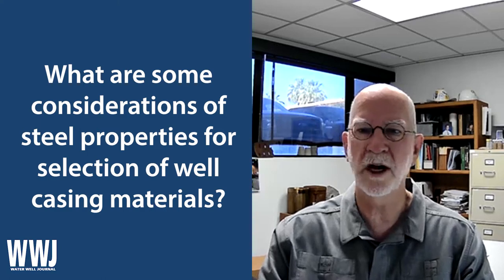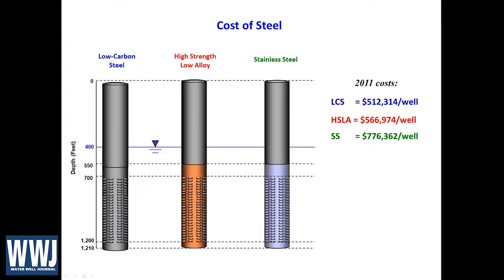I have a few slides, so I'm going to share my screen here. This slide is from my McElhaney lecture I did back in 2012. So this is 10-year-old data, but it gives us perspective. At that time I looked at three types of steel, and you see three different wells here that are identical. They're all 1200 feet deep, they're all 18 inches in diameter, and the only difference between them is the type of steel that the screen is made out of. We have low carbon steel on the left, high strength low alloy steel in the middle, and stainless steel on the right. You can see the cost differences are substantial. Ten years ago the well on the left would have cost a little over $500,000 and the one on the right would have cost $776,000—about a quarter million dollars more just because of a different steel type.